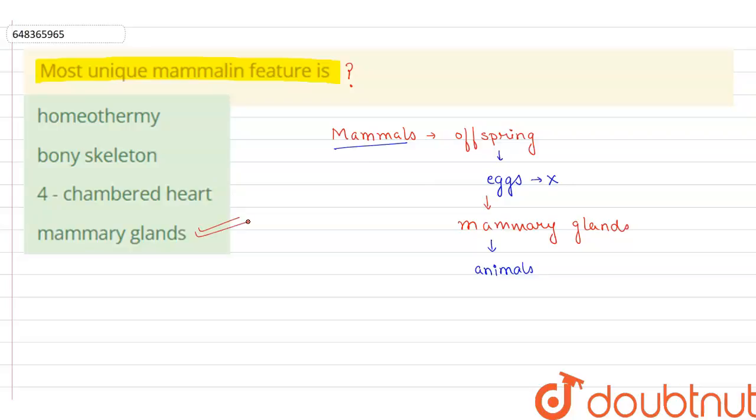So option number four, mammary gland is the correct answer. Because what we can see homeothermy, which means the warm bloodedness, the bony skeleton, the four chambered heart, we can easily find them in different organisms. But mammary gland is only and only present in mammals. So option four is the correct option.